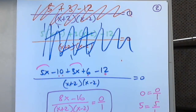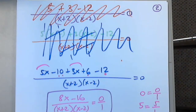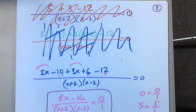It is a proportion. Why is this name so important? Because only in a proportion can I cross-multiply.